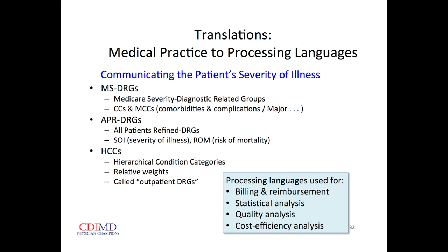There are three main methodologies used for this. The first two — MS-DRGs and APR-DRGs — are for inpatients. Medicare and the privates use MS-DRGs; APR-DRGs are used by Medi-Cal. The HCC hierarchical condition categories are codes derived from outpatient and inpatient diagnoses, and they're very important because they're used to judge us by quality and cost efficiency — that's the methodology used to fund accountable care organizations and Medicare Advantage organizations.